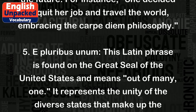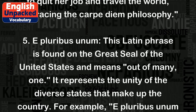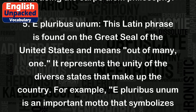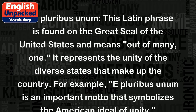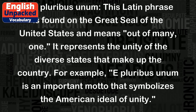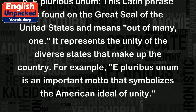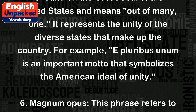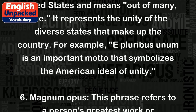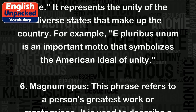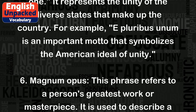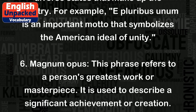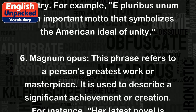5. E Pluribus Unum: This Latin phrase is found on the Great Seal of the United States and means 'out of many, one.' It represents the unity of the diverse states that make up the country. For example, E Pluribus Unum is an important motto that symbolizes the American ideal of unity.